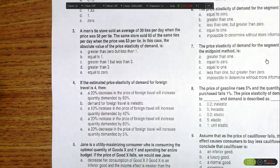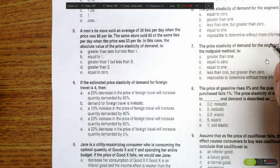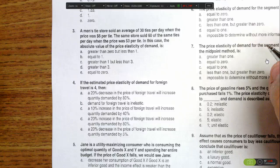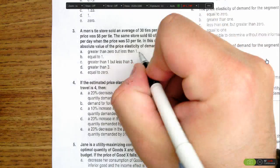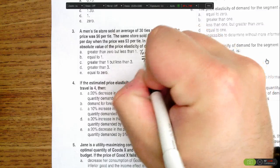Okay, there are two ways to go about answering this question. One would be to just use the midpoint method to calculate the price elasticity of demand. We know that the price elasticity of demand formula is the percent change in quantity demanded over the percent change in price.